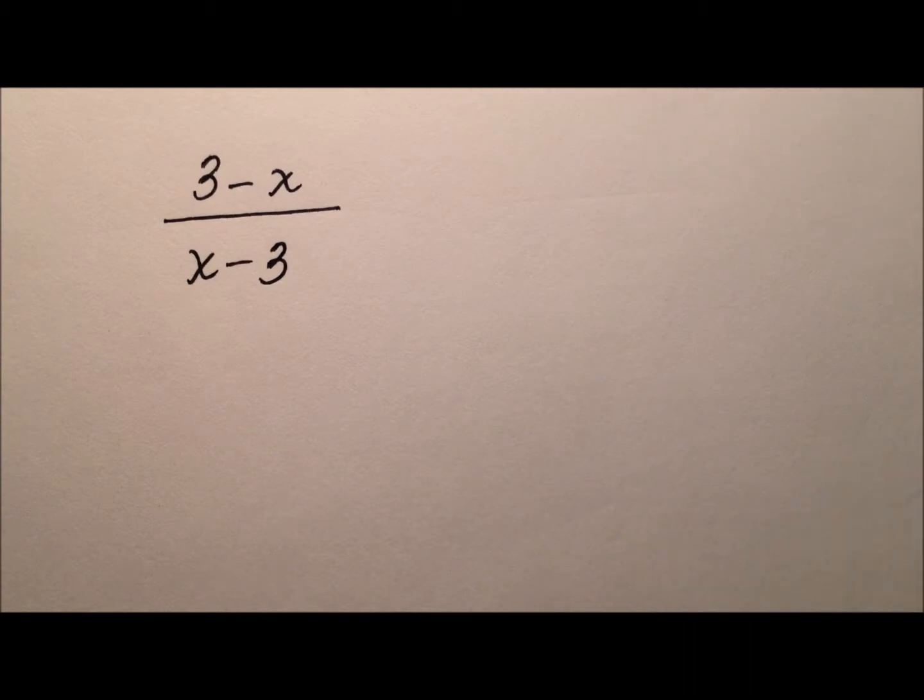In this video, I want to show you how to simplify a very specific case of a rational expression. Here you'll see that the numerator and the denominator are both binomials and they're being subtracted. But one additional piece is that the terms are in opposite order.